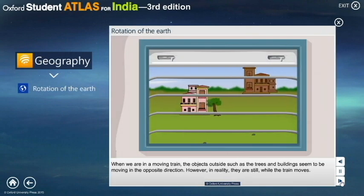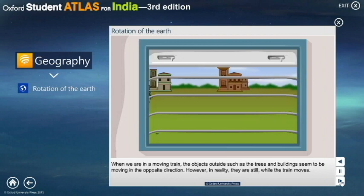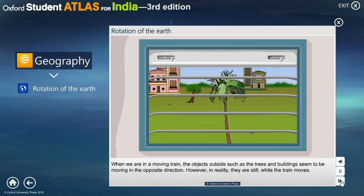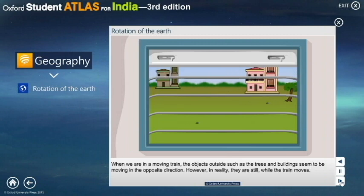When we are in a moving train, the objects outside, such as the trees and buildings, seem to be moving in the opposite direction. However, in reality, they are still, while the train moves.